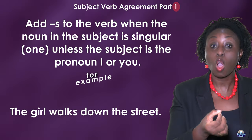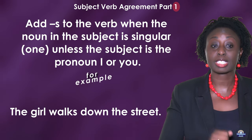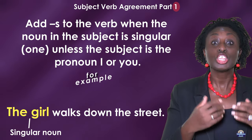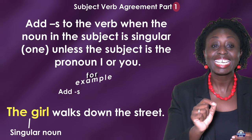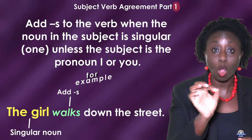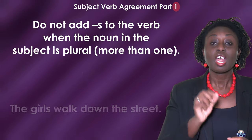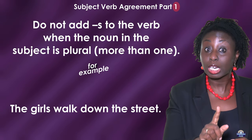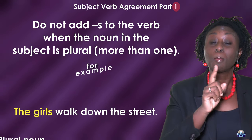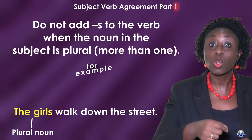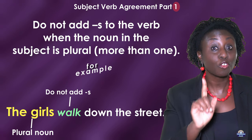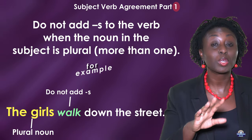The girl walks down the street. The girl is a singular noun, therefore we add S to the verb walk, so it will be walks. The girls is a plural noun, more than one, so do not add S to the verb walk — it is walk.